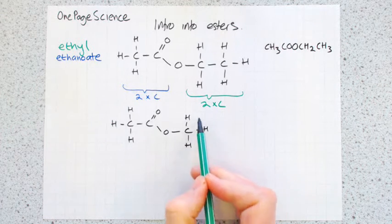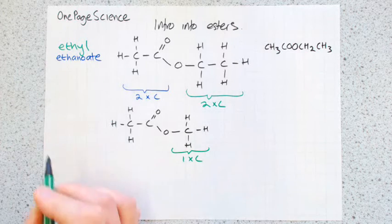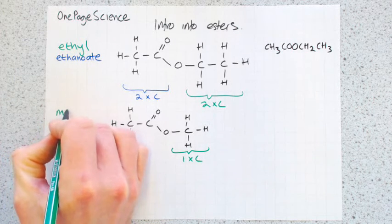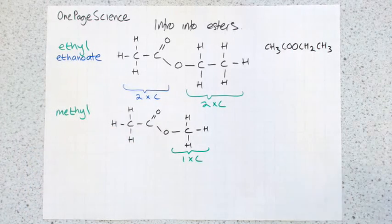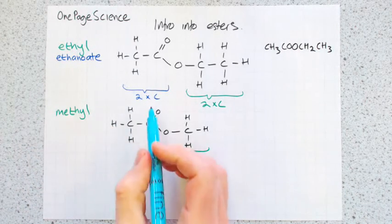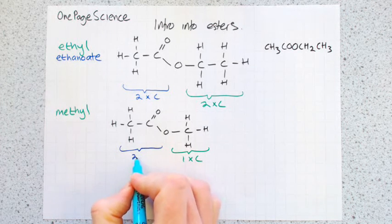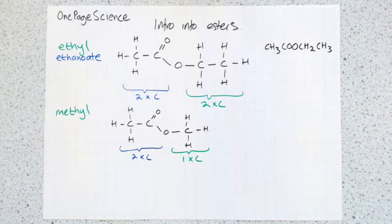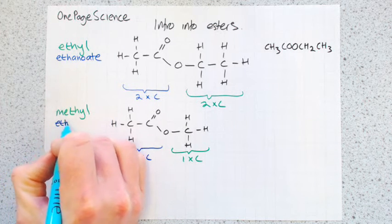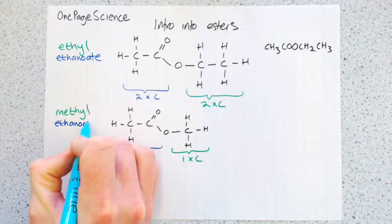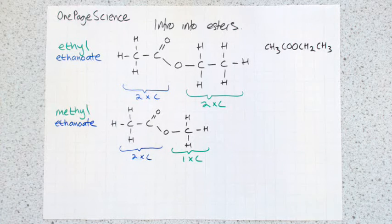So this time we've only got one carbon on the right hand side. So the first part of the name is not ethyl, but methyl. The left-hand part of the molecule is the same as the previous example. Two carbons there. So the second part of the name in this example is ethanoate. This is called methyl ethanoate.